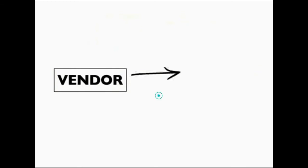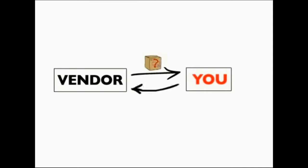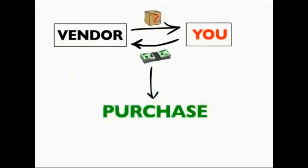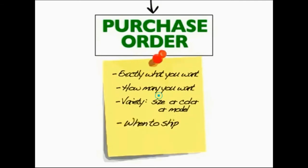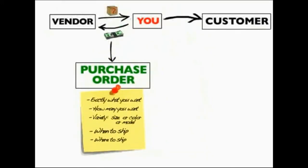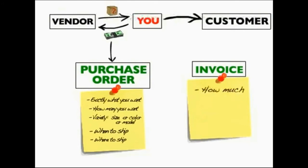When a vendor knows the requirements and supplies the goods, he asks for money. When you make a purchase, the vendor makes a list called a purchase order. A purchase order shows exactly what you want — how many, what variety, what color, what size or model, when the goods are going to be shipped, and where they are going to be shipped. When you sell to your customer, you similarly create a document listing what quantity and goods you are selling, at what currency, and what the delivery deadline is.